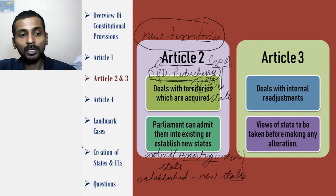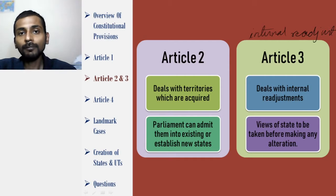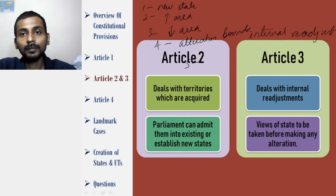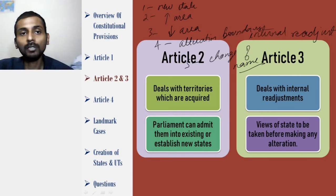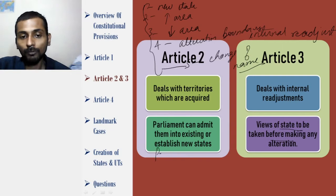Article 3 basically talks about the internal readjustment of states. It gives five ways in which this readjustment can be done: first, a new state can be created; second, the area of an existing state can be increased; third, the area of an existing state can be decreased; fourth, some alteration in the boundary; and fifth, change of name. These are the five internal readjustments that the constitution talks about under Article 3. It further says that any bill introduced for this purpose shall only be introduced upon the recommendation of the President of India.